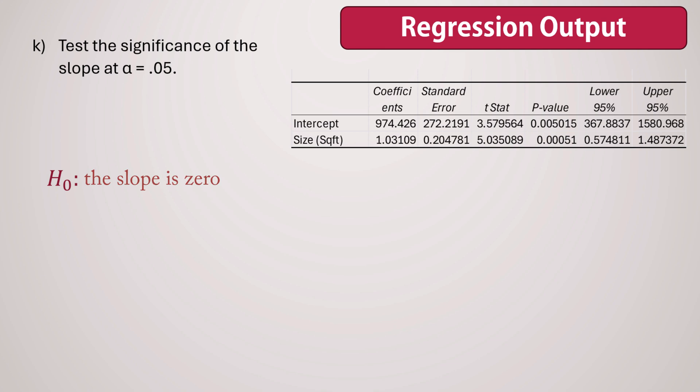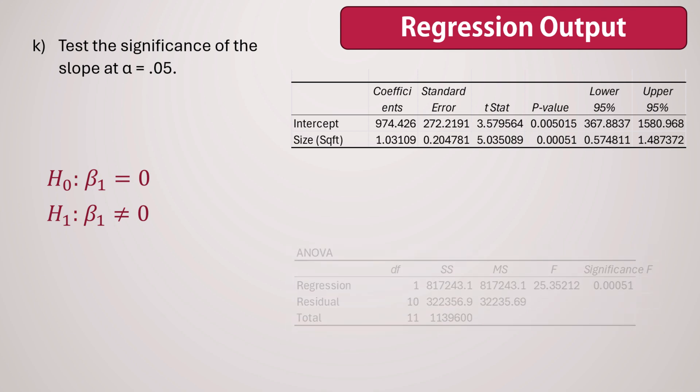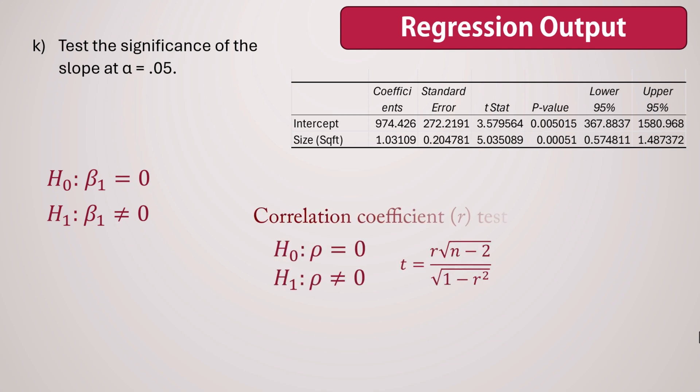We express this as beta1 equals 0, where beta1 is the population slope. The alternative hypothesis HA or H1 states that a linear relationship does exist, meaning the slope is not equal to 0. We write this as beta1 not equal to 0. We'll conduct a t-test for this analysis, but it's worth noting that an F-test will lead us to the same conclusion. And the same conclusion will be reached if we conduct a test for the population correlation coefficient.